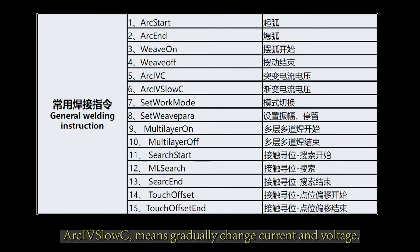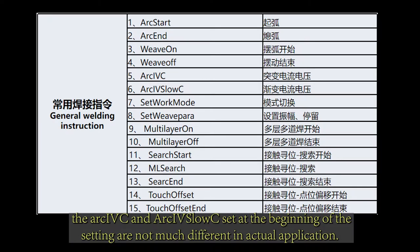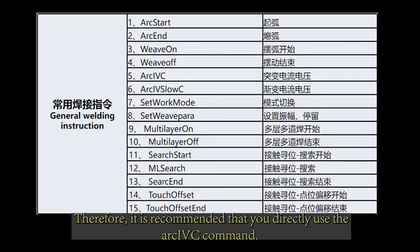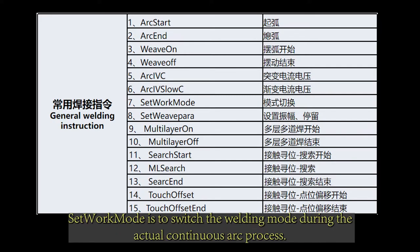Arc IV slow C means gradually change current and voltage. The Arc IVC and Arc IV slow C set at the beginning are not much different in actual application. Therefore, it is recommended that you directly use the Arc IVC command.